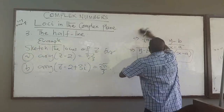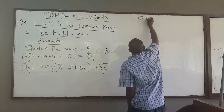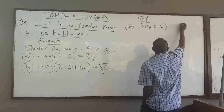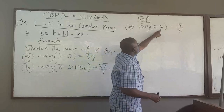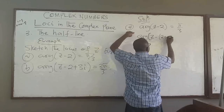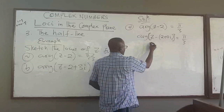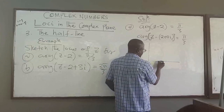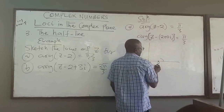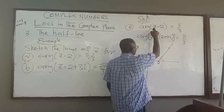To sketch that, we just need to find z naught and get the angle. For part (a), arg(z minus 2) equals pi over 3 means z naught is the point 2 plus 0i, so the point (2, 0). On the complex plane, we are at the point (2, 0), and from there we make an angle of pi over 3. All the points along this ray are described by this equation.